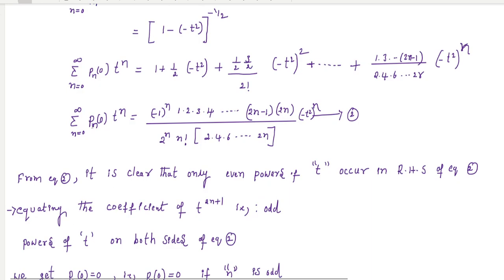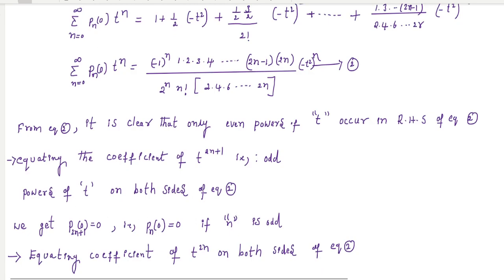Clearly, P_n(0) t^n equals the nth term. Substituting n = 0, 1, 2, 3, and so on gives these terms. Observing equation 2, only even powers of t appear on the right-hand side — the coefficients of t^(2n+1) are zero. Equating the coefficient of t^(2n+1) on both sides gives P_n(0) = 0 if n is odd.